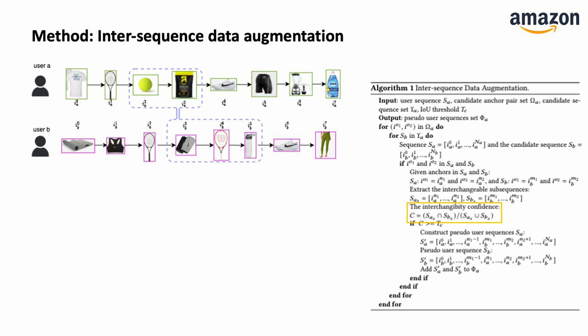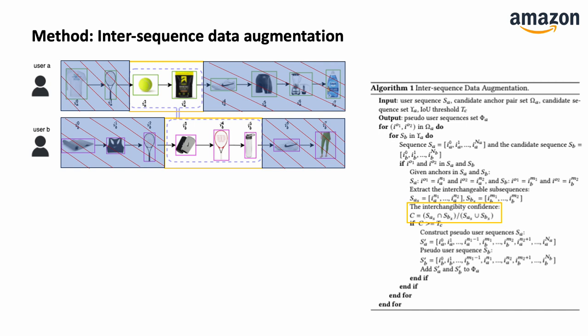To identify which item to exchange between sequences, we identify two anchor items from two sequences. For example, customer A and customer E both bought the same tennis pad and tennis shoes. We assume that the items bought after the tennis pad lead to the same idea of buying the tennis shoes. Therefore, we hypothesize that items bought between the tennis pad and tennis shoes contribute similarly to buying the tennis shoes and are therefore exchangeable.